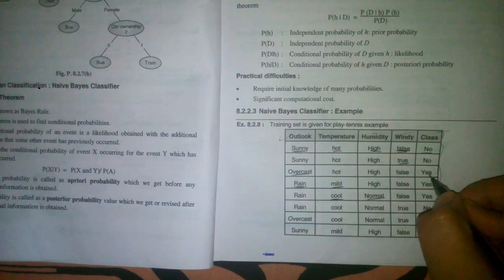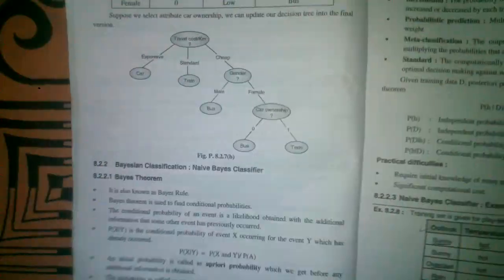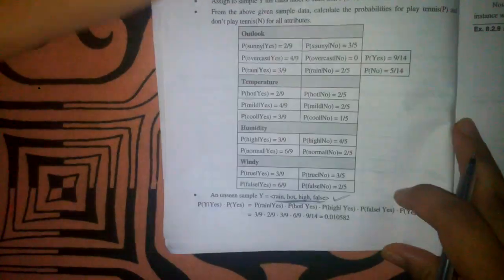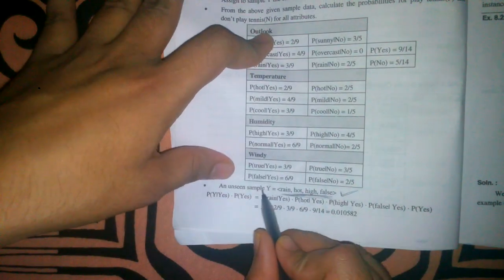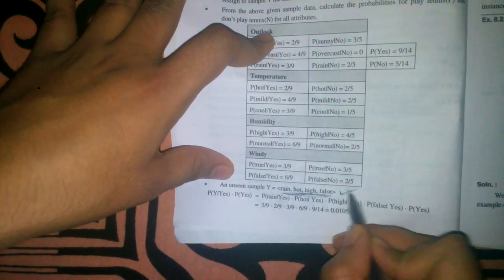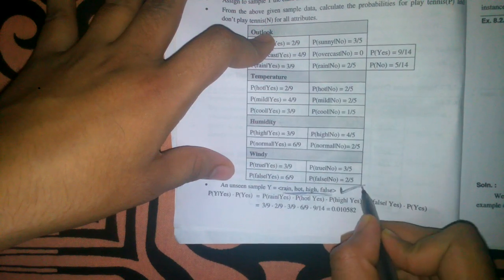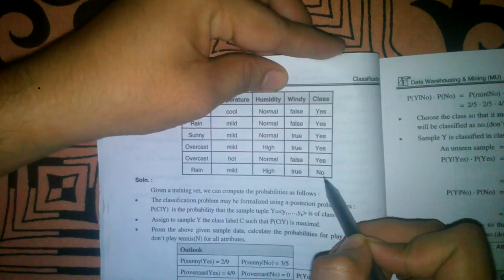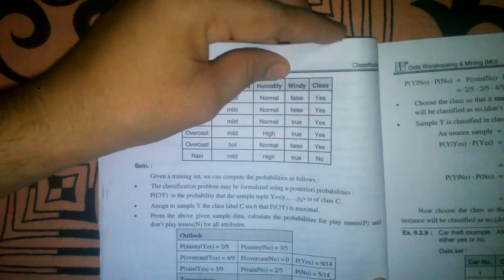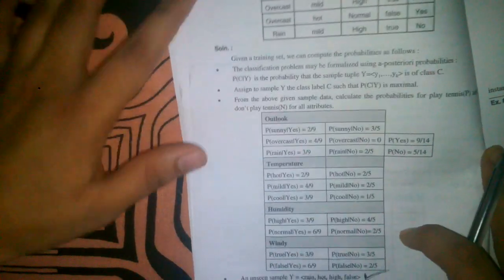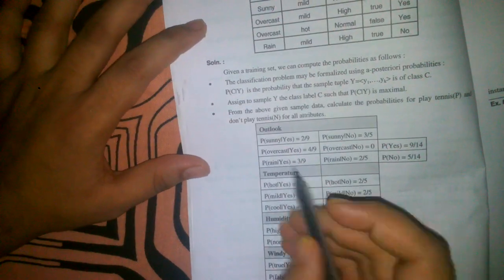We've been given an unseen sample: rain, hot, high, and false. We need to find which class it belongs to — either yes or no. To approach this, we find the probability of each distinct attribute with respect to each class.